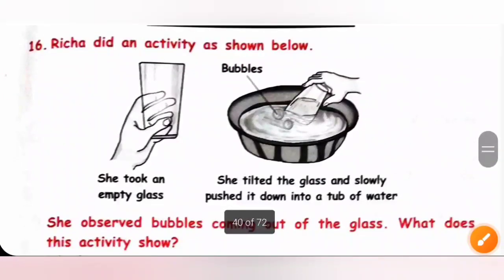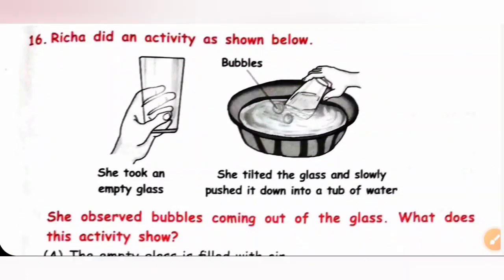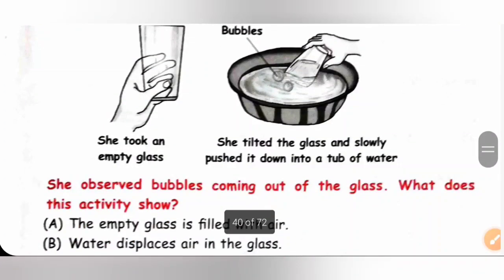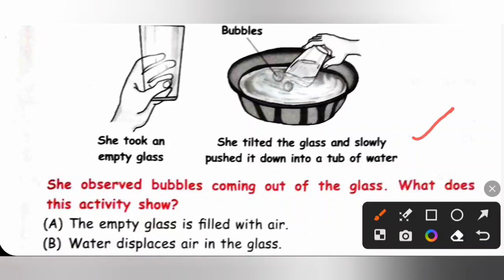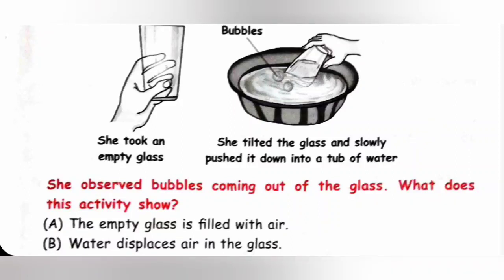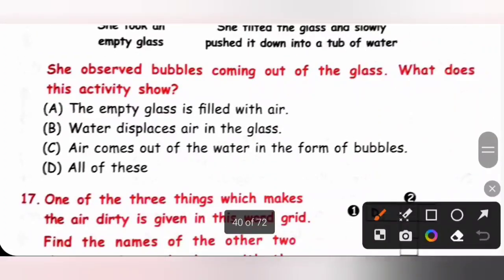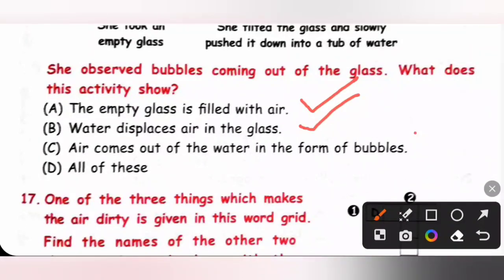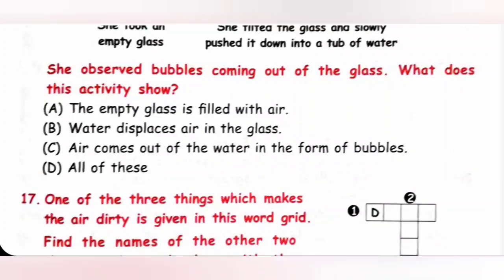Achieve section. Question 16: Richa took an empty glass, tilted it, and slowly pushed it down into a tub of water. She observed bubbles coming out of the glass. This activity shows that the empty glass is filled with air, water displaces air in the glass, and air comes out of the water in the form of bubbles. Option D — all of these — is the correct answer.